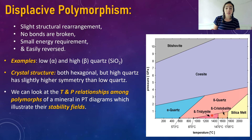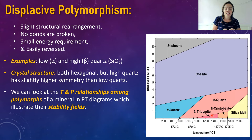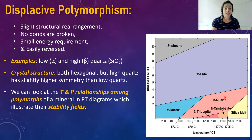Displacive polymorphism is basically the exact opposite of reconstructive. Instead of extensive structural rearrangement, bond breakage, large energy requirements, and being not easily reversed, displacive polymorphism involves only a slight structural rearrangement, no breakage of bonds, a very small energy requirement, and it's easily reversed. Alpha and beta quartz fall under this category, so the switch from alpha to beta quartz can be reversed and doesn't require large structural rearrangement.